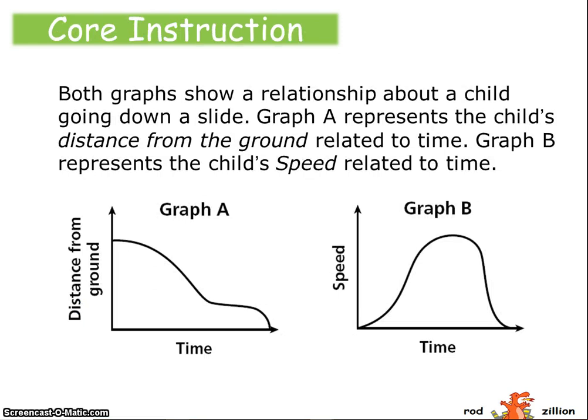Sometimes graphs may be comparing the same thing or talking about the same thing, but they mean different things based upon the axes. In this case, graph A is representing a child's distance from the ground related to time. Yet in graph B, we're talking about a child's speed related to time. They're both describing a child going down a slide, but because of the labels of the axes, they are showing two different relationships.